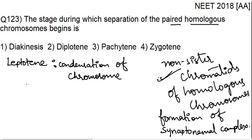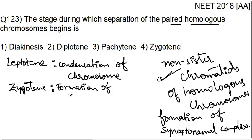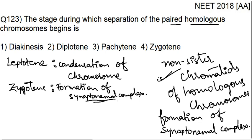The second phase is zygotene, where there is formation of the synaptonemal complex and also pairing of homologous chromosomes. Both homologous chromosomes come together, and only then is the formation of the synaptonemal complex possible.